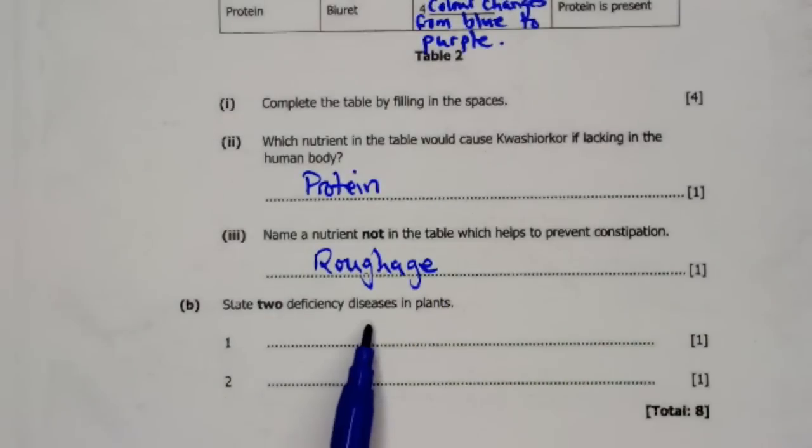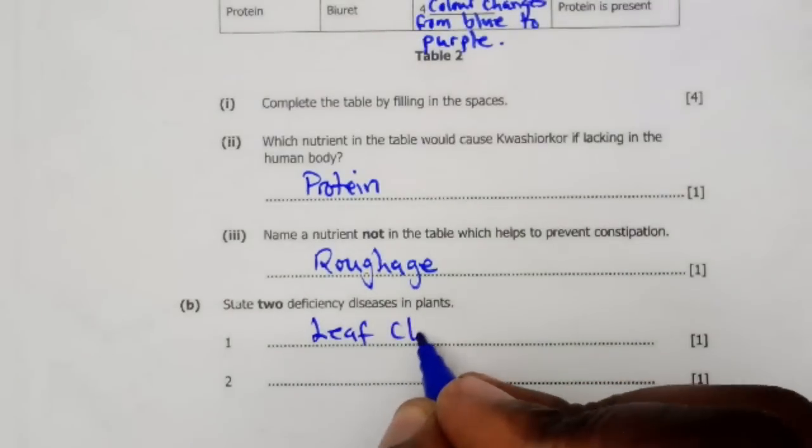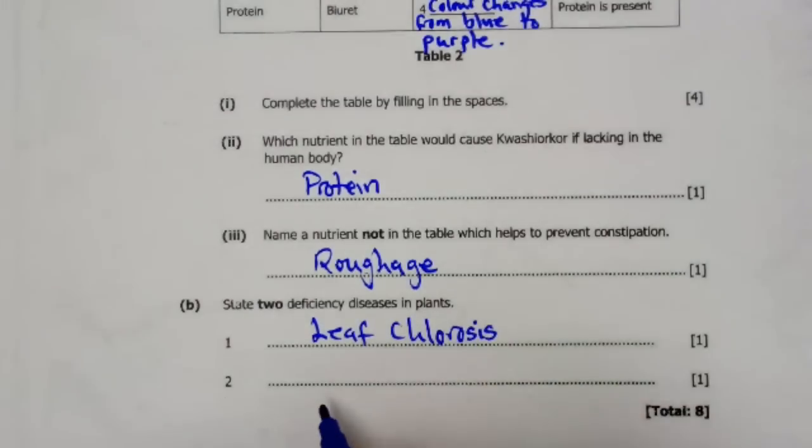B: State 2 deficiency diseases in plants. Deficiency diseases in plants, we can have leaf chlorosis as well as leaf curling. These were the answers to question number two.